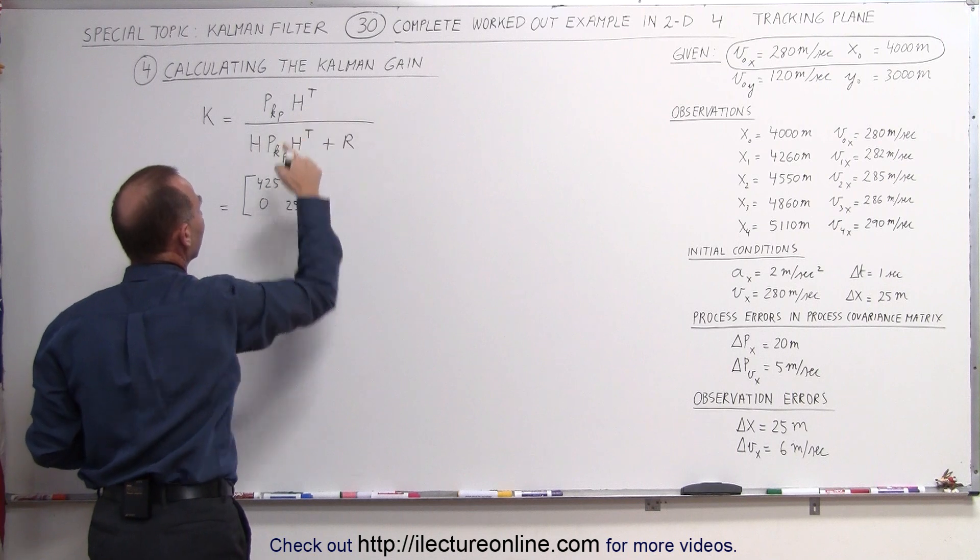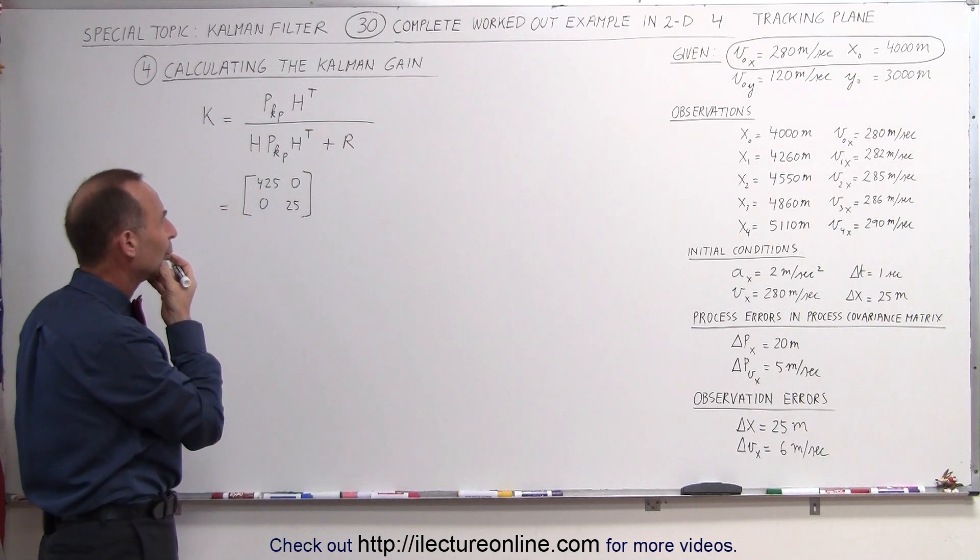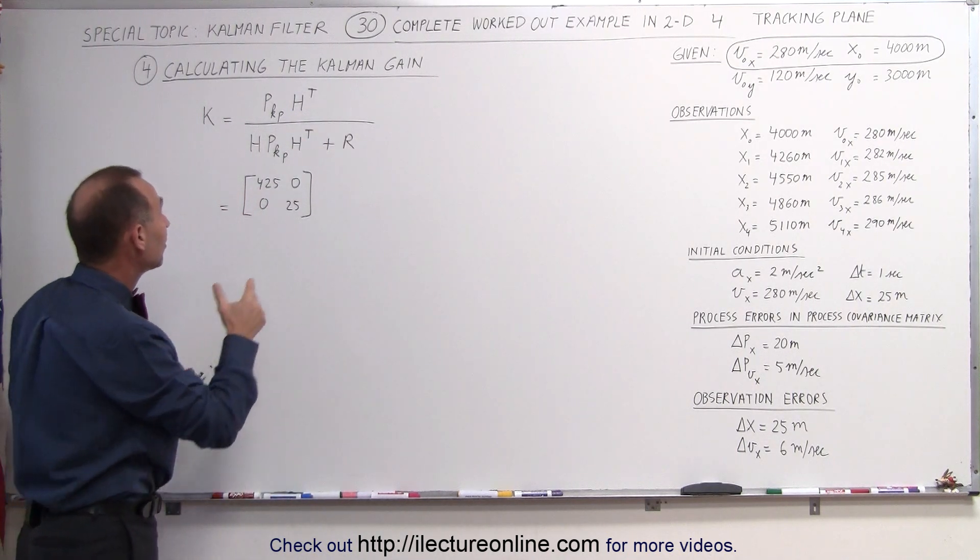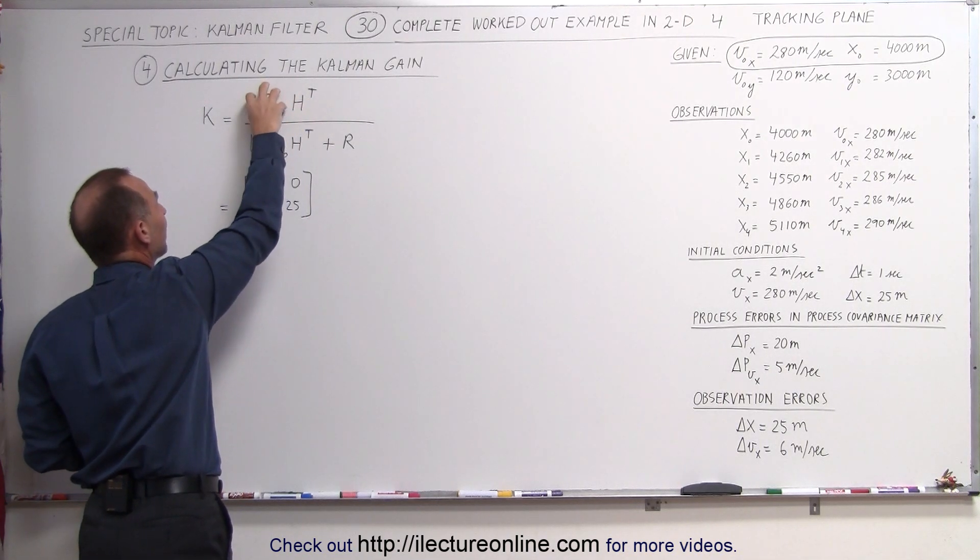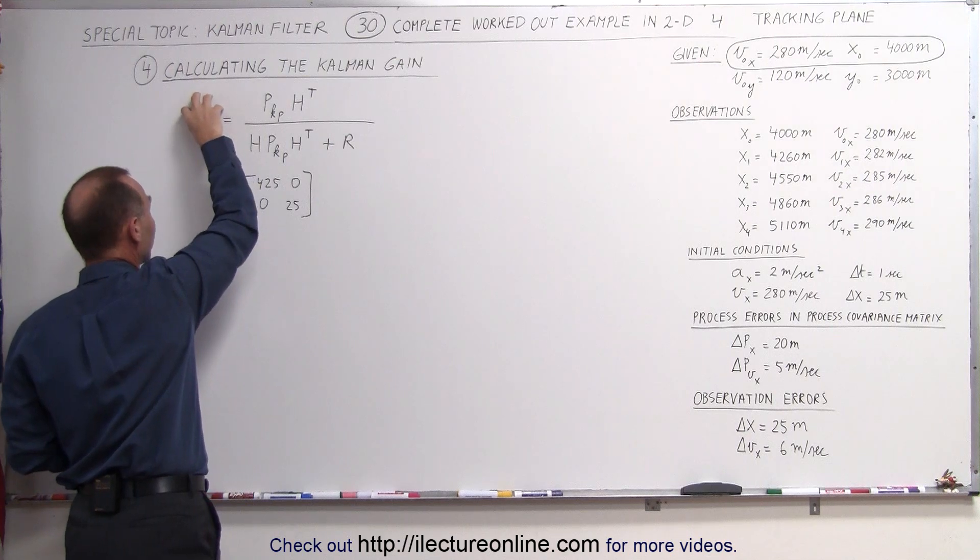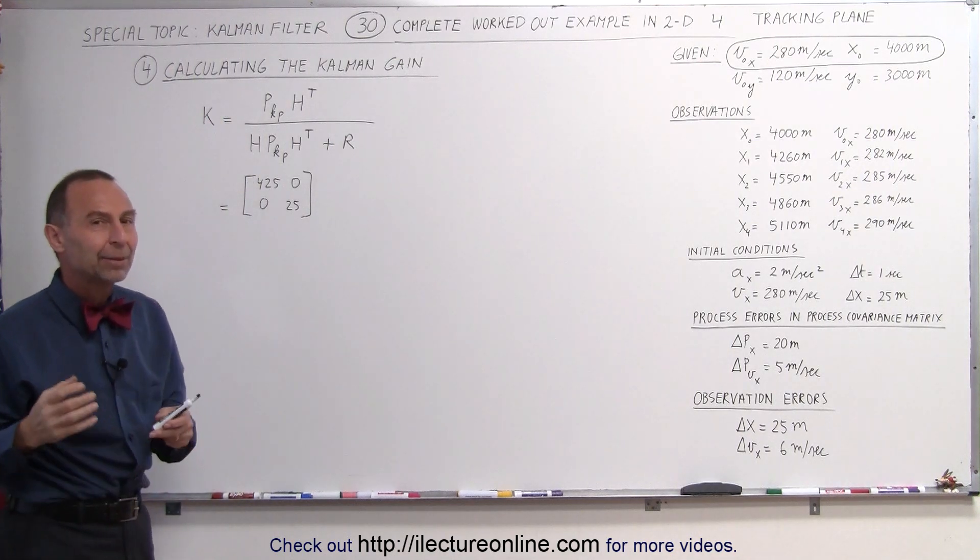We have to multiply that times H transpose. Now what is H? Well, H is simply a matrix that allows us to change the format of this matrix into the format of the Kalman gain matrix.